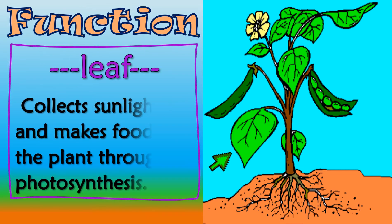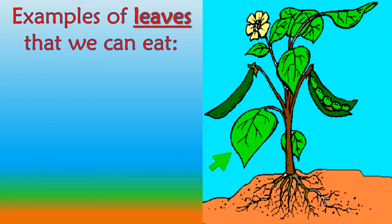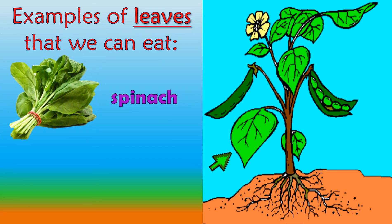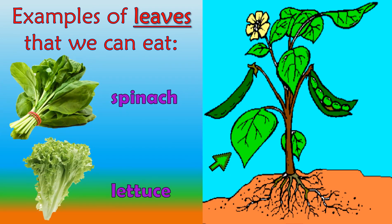Leaves collect sunlight and make food for the plant through photosynthesis. Here are some examples of leaves that we can eat: spinach and lettuce.